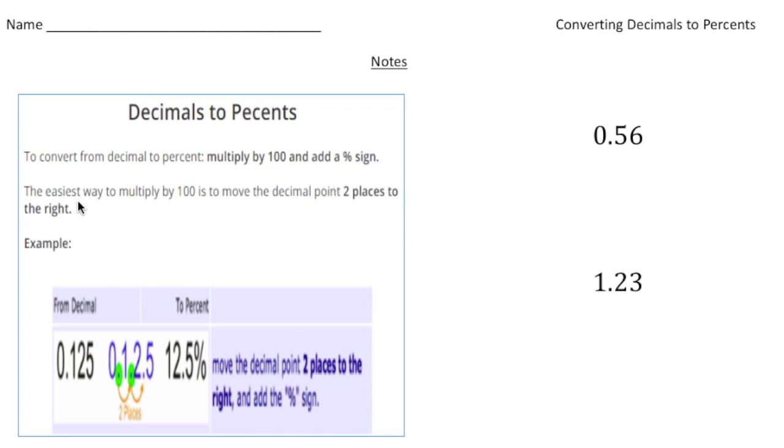The easiest way to multiply by 100 is to move the decimal point two places to the right.